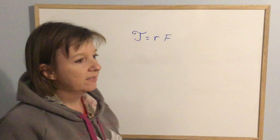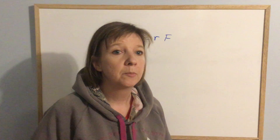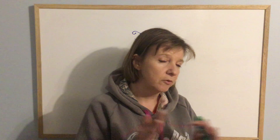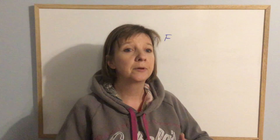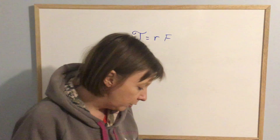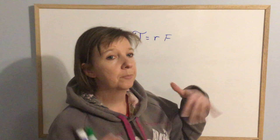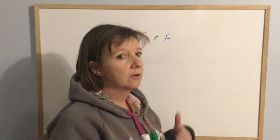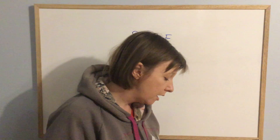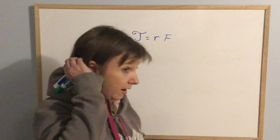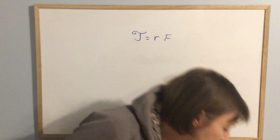We talked about static equilibrium. Static equilibrium is when all the forces added together equal zero and all the torques added together equal zero — meaning the object is not moving translationally and not moving rotationally. We did one with a fireman going up a ladder, standing about two thirds of the way up. The ladder is hopefully in static equilibrium because you don't want your ladder moving. Diagrams are very, very helpful when doing those.